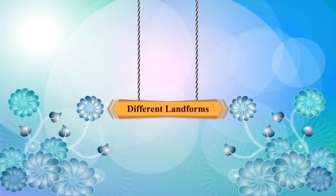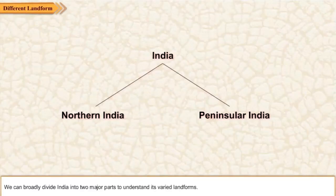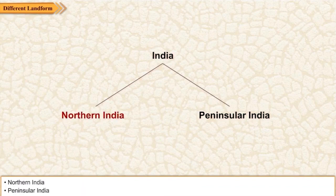Different landforms. We can broadly divide India into two major parts to understand its varied landforms: Northern India and Peninsular India.